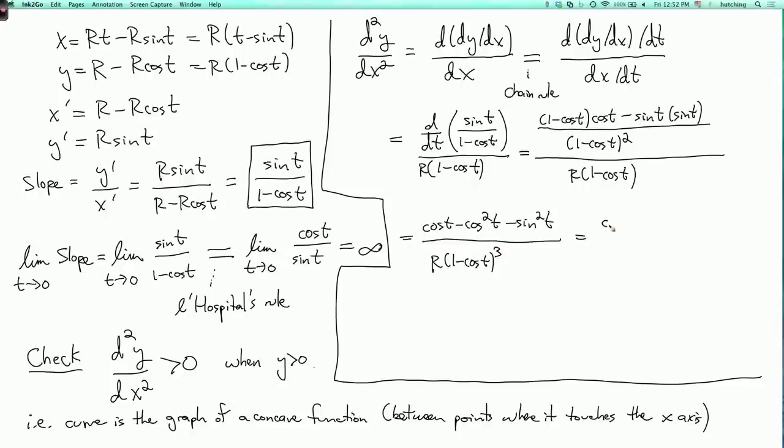And this, I can simplify to cos t minus 1, because cos squared plus sin squared is 1, divided by r times 1 minus cos t cubed. Then I can cancel out a 1 minus cos t here, to finally write this as minus 1 over r times 1 minus cos t squared.